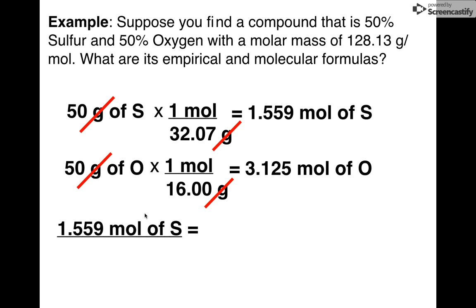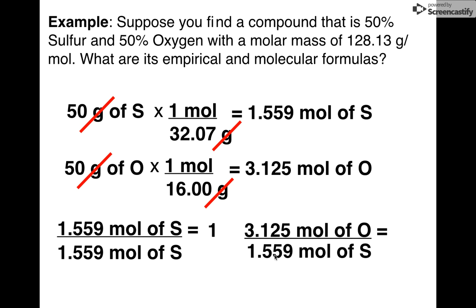Great. Now, what do I do? I take whichever one of these is smaller, and I divide by it. 1.559 is smaller than 3.125. So I take this, and I divide by 1.559. Great. My mole ratio is 1. I have 1 sulfur in my compound, empirical formula-wise. I've got to do that also for oxygen. 3.125 divide by the smaller number, 1.559. I get 2. Great. I have double the amount of oxygen. So I have 1 sulfur, and I have 2 oxygens.